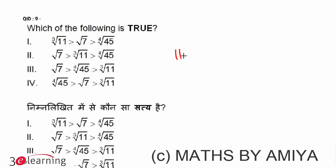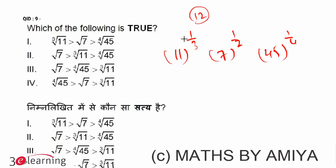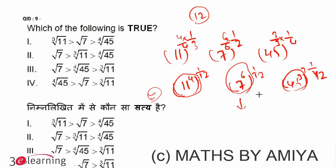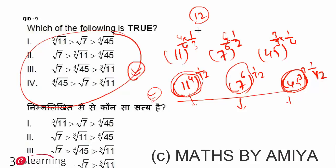The other method is equating the powers. We have 11 raised to power 1/3, 7 raised to power 1/2, and 45 raised to power 1/4. The LCM of 3, 2, and 4 is 12. Multiplying through, we get 11 raised to power 4 all to power 1/12, 7 raised to power 6 all to power 1/12, and 45 raised to power 3 all to power 1/12. Then compare 11 to the 4th, 7 to the 6th, and 45 cubed to find the largest.